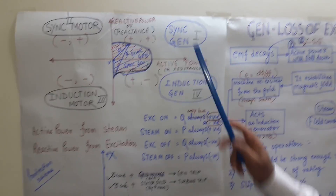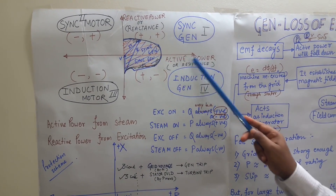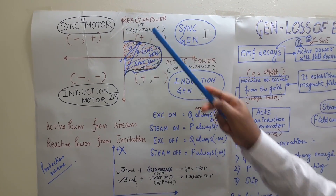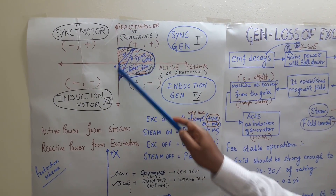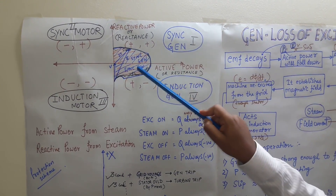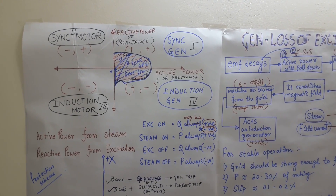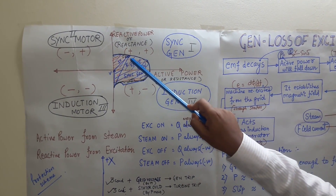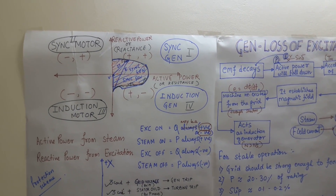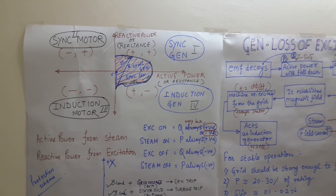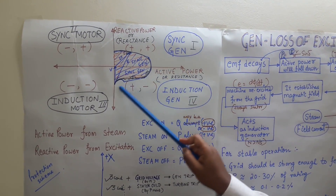Look at this picture. The X axis stands for active power and the Y axis stands for reactive power. This is the capability curve of the generator. If the generator is operating within this zone, the generator is in healthy condition. If the operating point is going out of this zone, the generator is operating at abnormal condition.